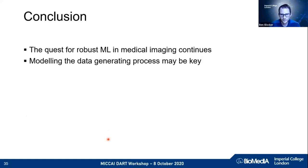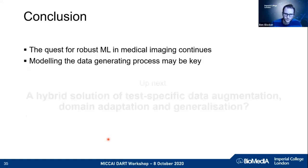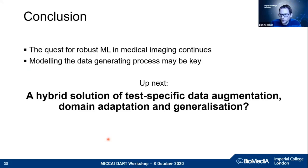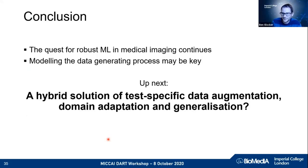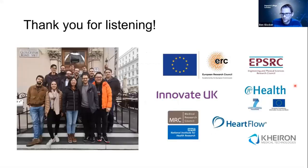To conclude: the quest for robust machine learning is not done. One way forward is to model the data generating process from the ground up — causality can help with that. Perhaps the next step is hybrid approaches combining test-specific data augmentation with domain adaptation and generalization, or something completely different. It's still an exciting field to make progress in. Thanks very much, and I look forward to your questions.